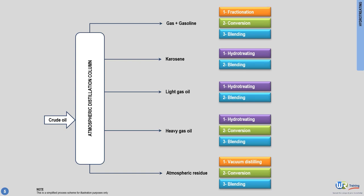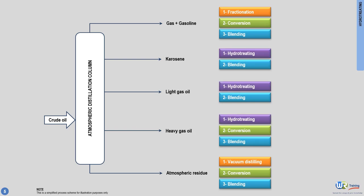Now that we have seen the major conversion processes used in petroleum refineries to upgrade and convert the naphtha cut, let's move on to the next petroleum cut given by the atmospheric distillation column — kerosene and gas oil — and discuss how they are treated in downstream processes.